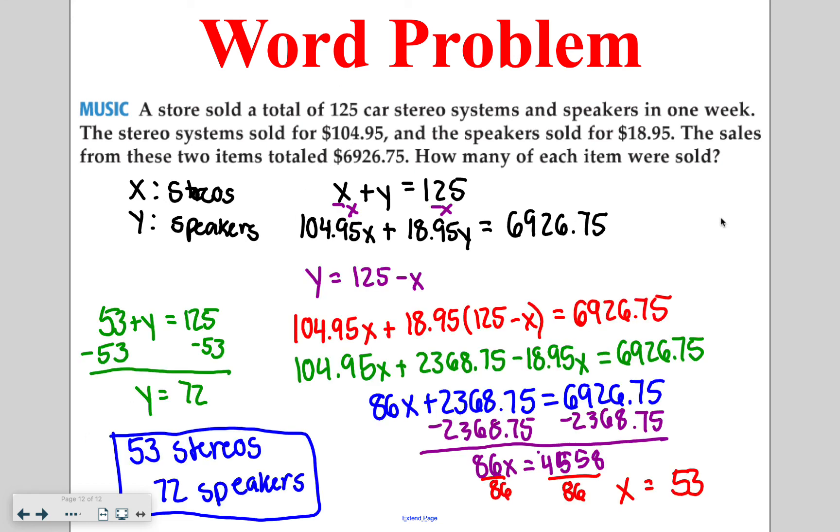Go ahead and try solving the rest of this problem on your own. So in order to solve this problem, you need to isolate one of the variables. I chose to isolate y. Plug that in, go through and solve. That gave me x is equal to 53. Then I plugged x back into the first equation and found that y is equal to 72, meaning they sold 53 stereos and 72 speakers.